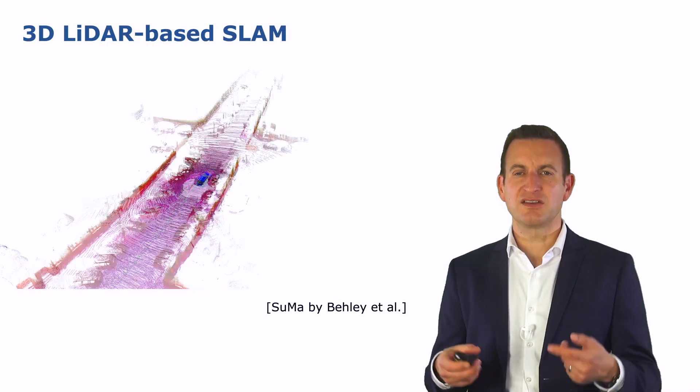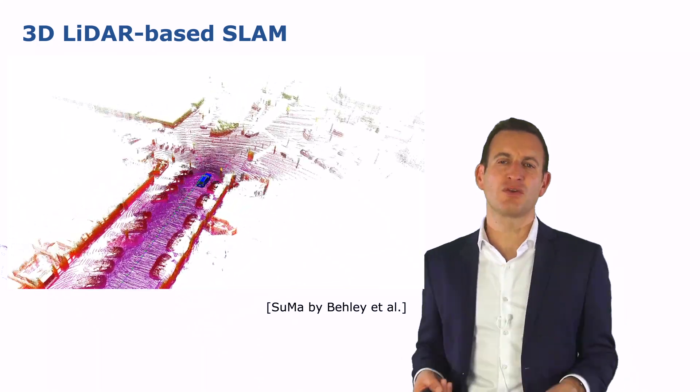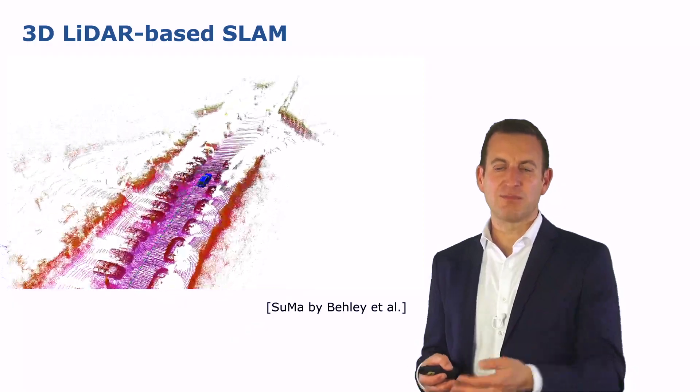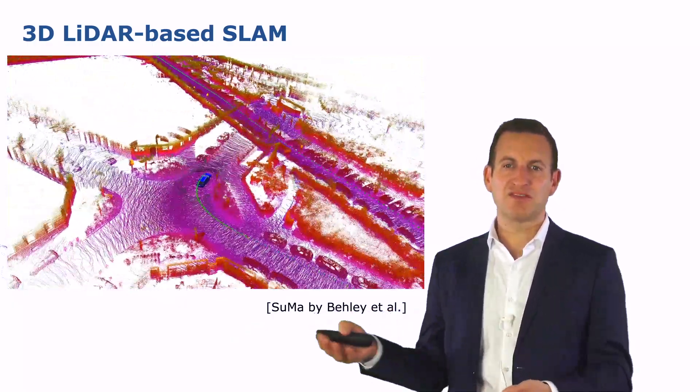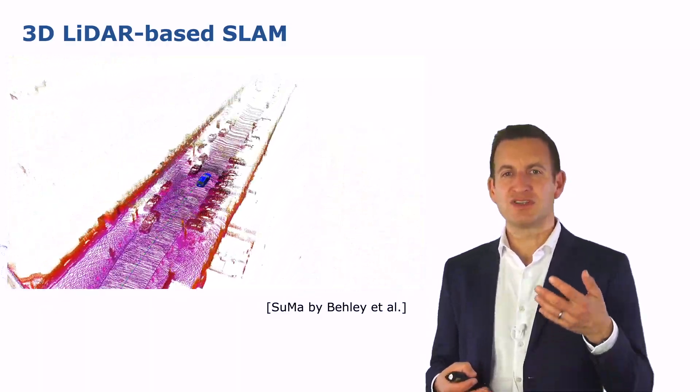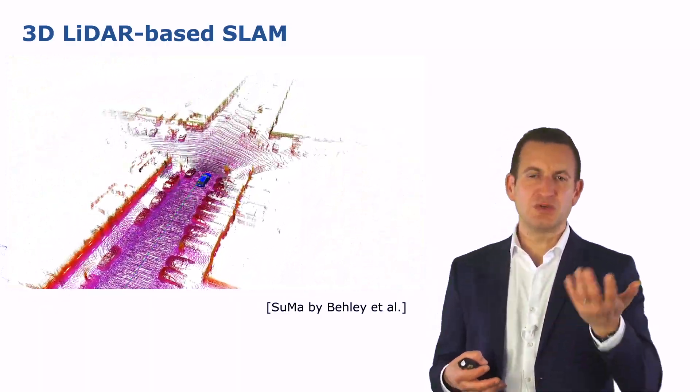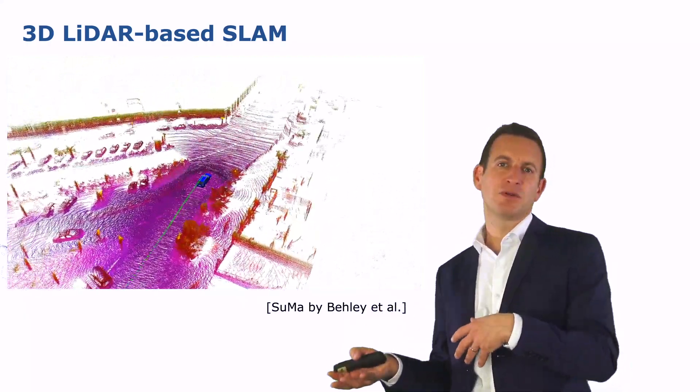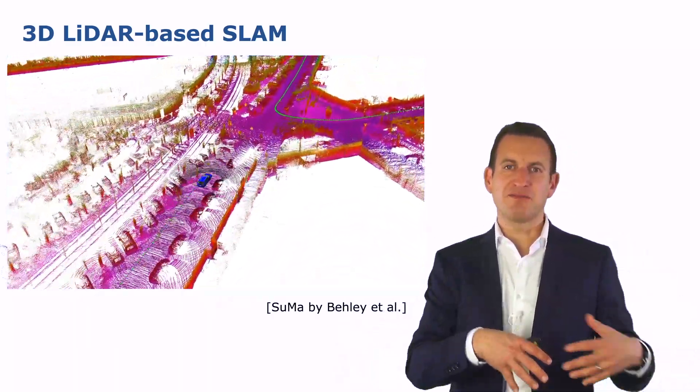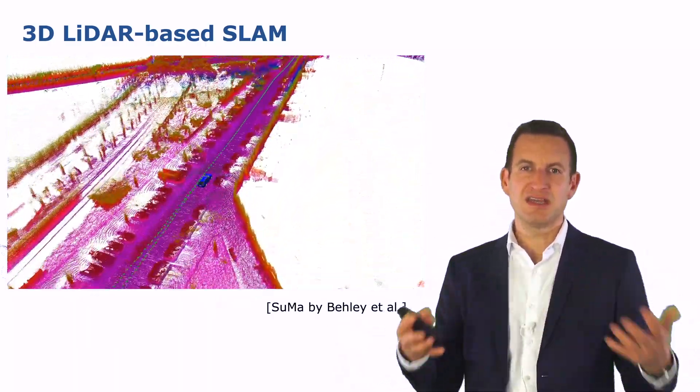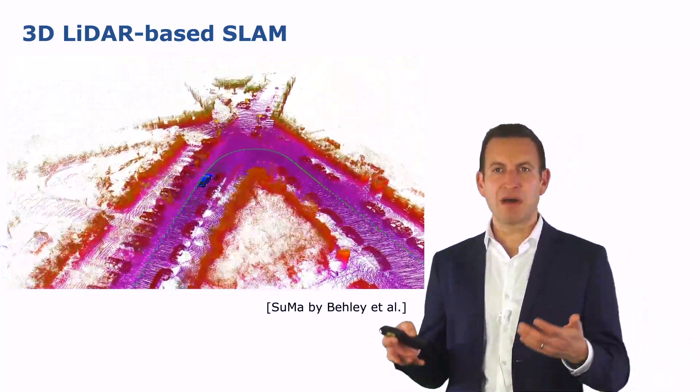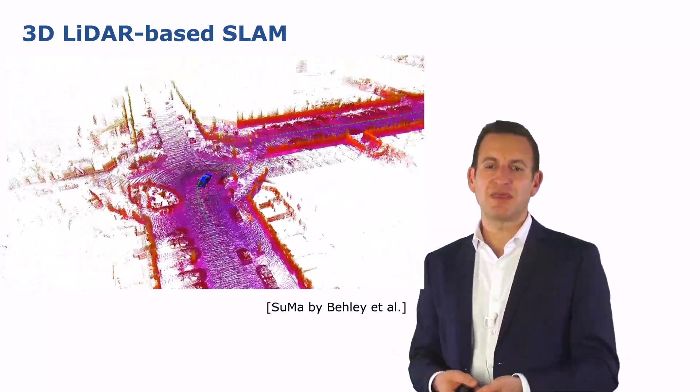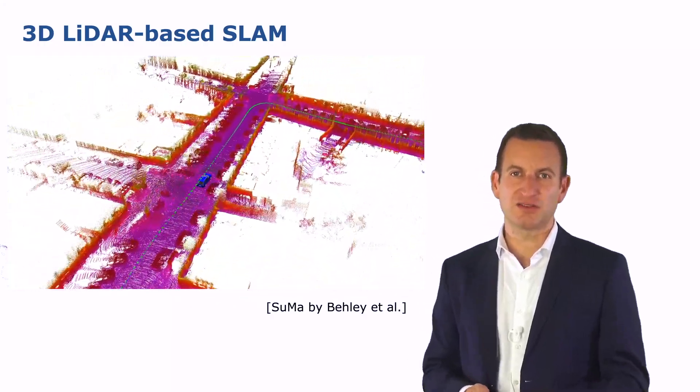We can then use these ideas, the pose graph, the least square error minimization and those robust kernels, so all the elements shown here within these three lectures and integrate them into a SLAM system. One example for this is SUMA by Jens Behley, which is a LiDAR based SLAM system which is used, for example in autonomous driving applications, building a map of the environment, building up a pose graph, finding loop closures, registering those different parts of the environment, performing the optimization, taking into account a robust kernel in order to come up with an appropriate map of the environment. And this is a system that you can build if you integrate the techniques that we have been presenting here into a single system.